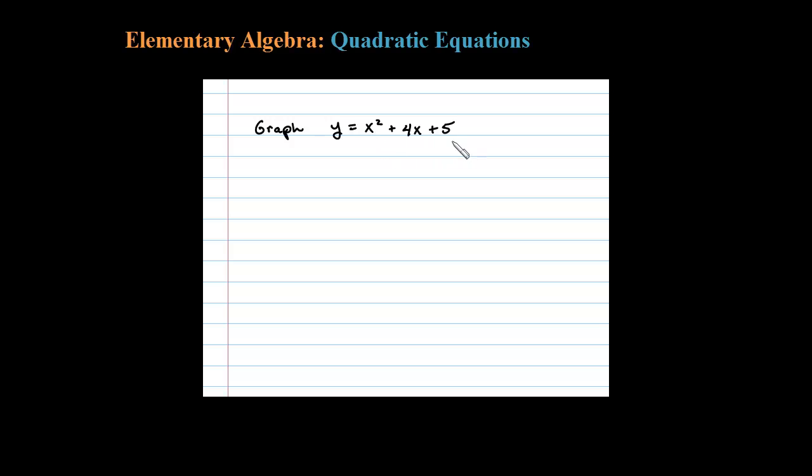You're asked to graph a quadratic function. The graph is going to be a parabola. The first step is to find the y-intercept. The y-intercept occurs when x is 0, so in this case when x is 0, y is 5.